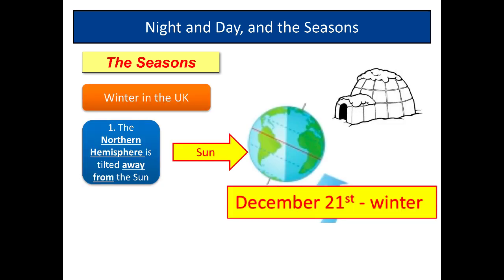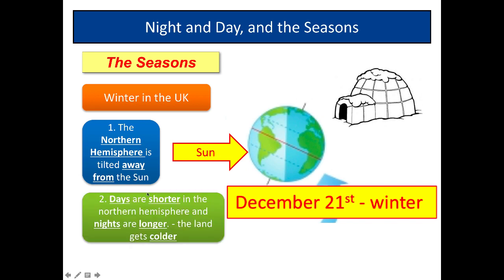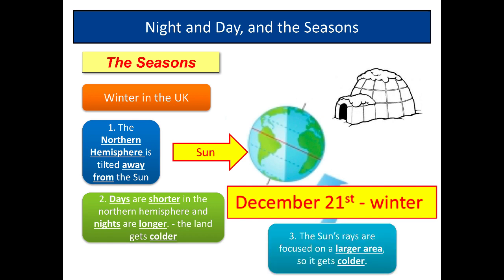The opposite is winter in the UK. The Northern Hemisphere is tilted away from the Sun — more of the Southern Hemisphere is exposed. Days are shorter in the Northern Hemisphere, nights are longer, and the land gets colder. By December 21st we may have about 6 hours of daylight and 18 hours of night. The Sun's rays are also more spread out over a larger area in the Northern Hemisphere, so it gets colder.